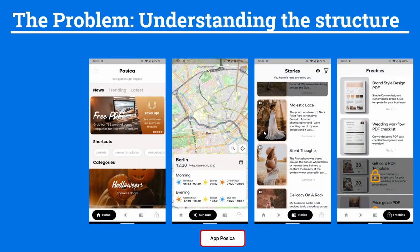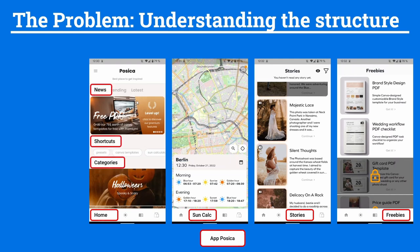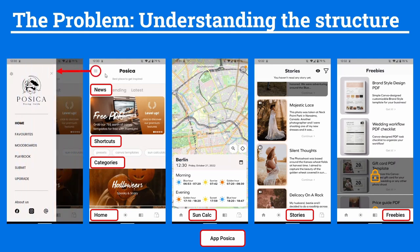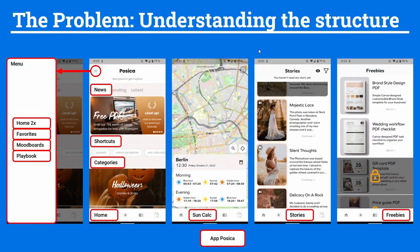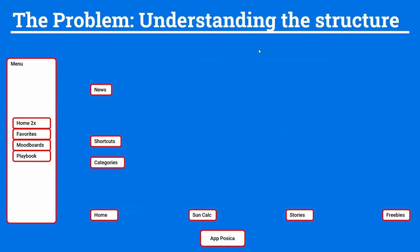Let's understand the structure first. We have screens: freebies, stories, the sun calculator, and the home tab. In the home tab we have categories, shortcuts, news, trending and latest. We also have a menu button only in the home tab — clicking it shows home again, then favorites, mood boards, and playbooks. These are the main features. Now that we've mapped out all the features, let's connect everything into a tree structure.